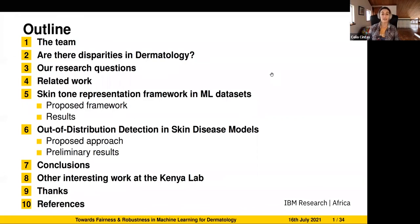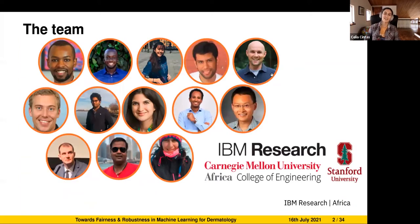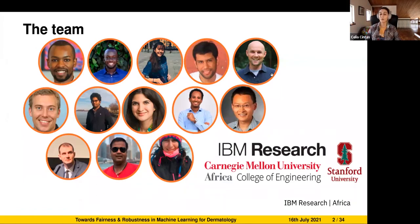I'll also call out some other interesting work at the lab that you might want to collaborate on. The team behind these results includes research scientists, machine learning engineers, dermatologists, master's and PhD students from IBM Research in three locations: Yorktown in the US, Zurich, and Nairobi, Kenya. We also have internship programs with students from CMU Rwanda and Kigali, and dermatologists who are experts from Stanford.